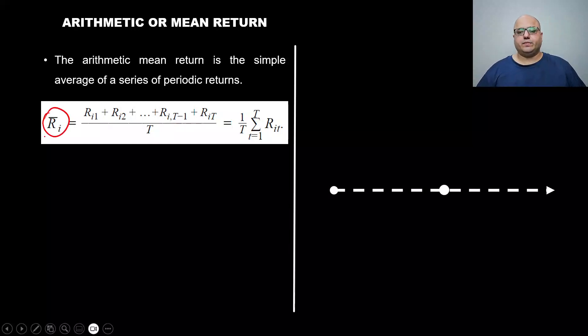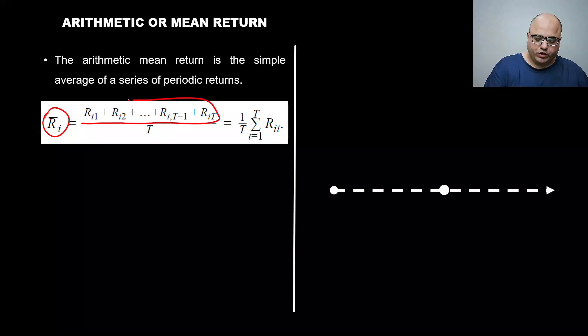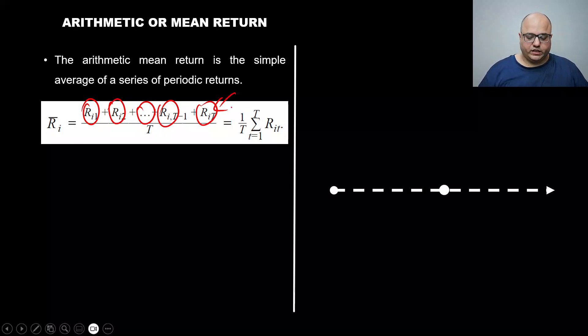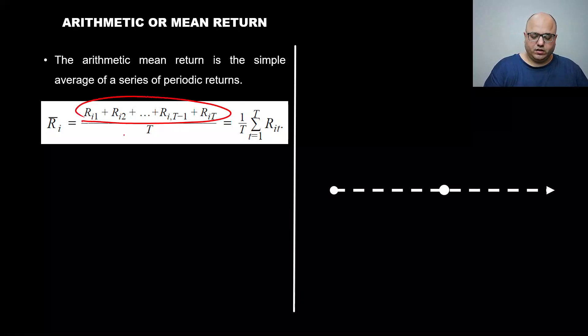This basically represents arithmetic mean return. If you have multiple periodic returns, R1, R2, more in the middle, and RT being the last one, you're going to sum all of them up and then divide by the number of occurrences.